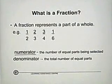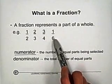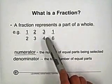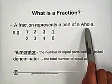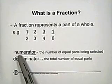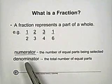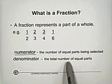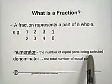For example, we have one-half, two-thirds, three-fourths, and one-sixth. We can also read one over two, two over three, three over four, one over six. A fraction represents a part of a whole. It consists of two parts. The top number we call numerator. The bottom number is called denominator. The denominator represents the total number of equal parts, and the numerator represents the number of equal parts being selected.